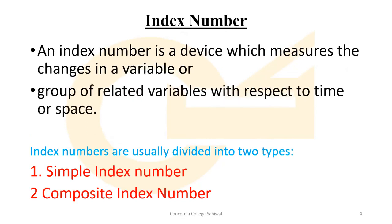Dear students, what is an index number? An index number is a device which measures the changes in a variable or a group of related variables with respect to time or space. As we know, index number has another name — it is called an economic barometer.